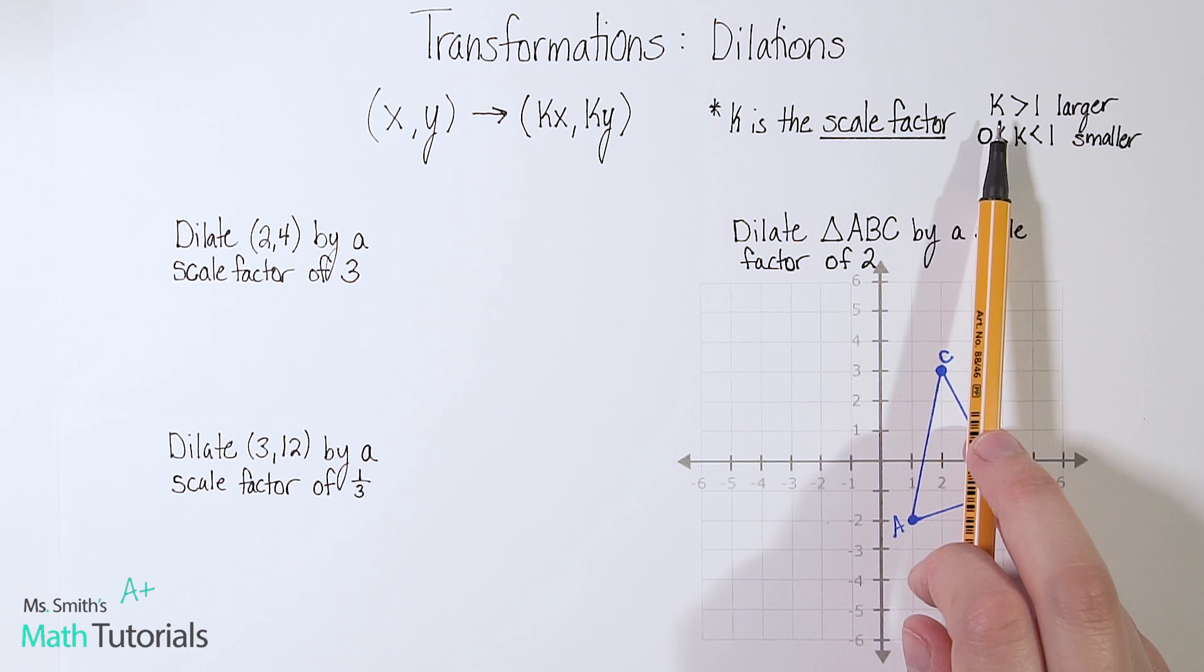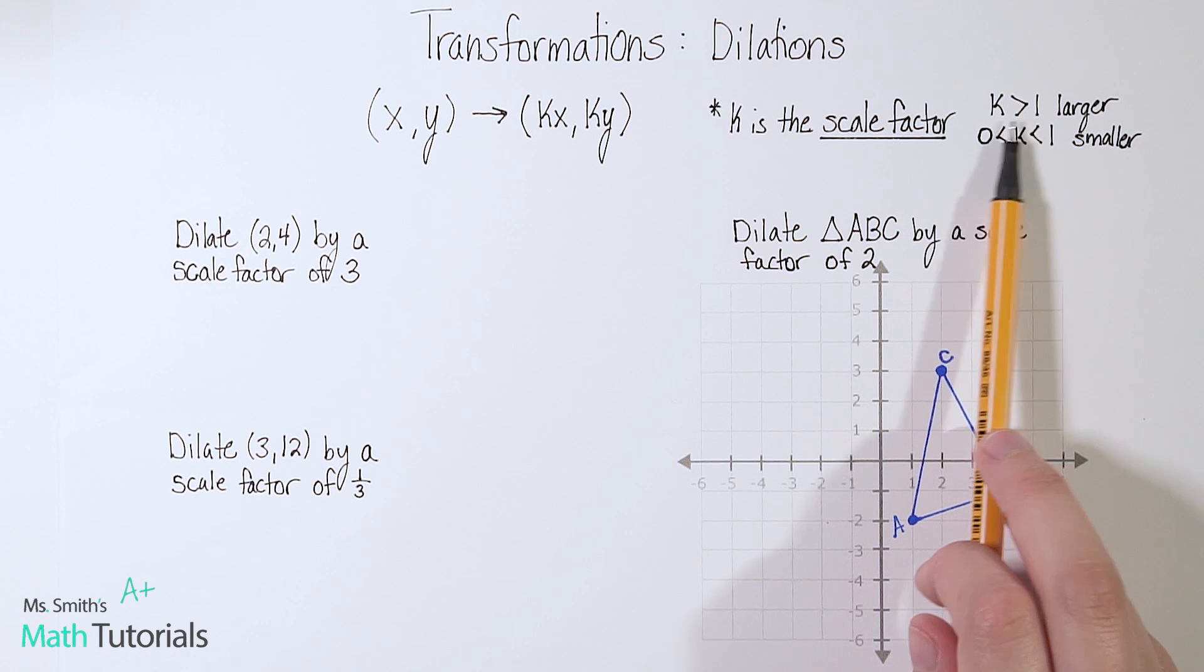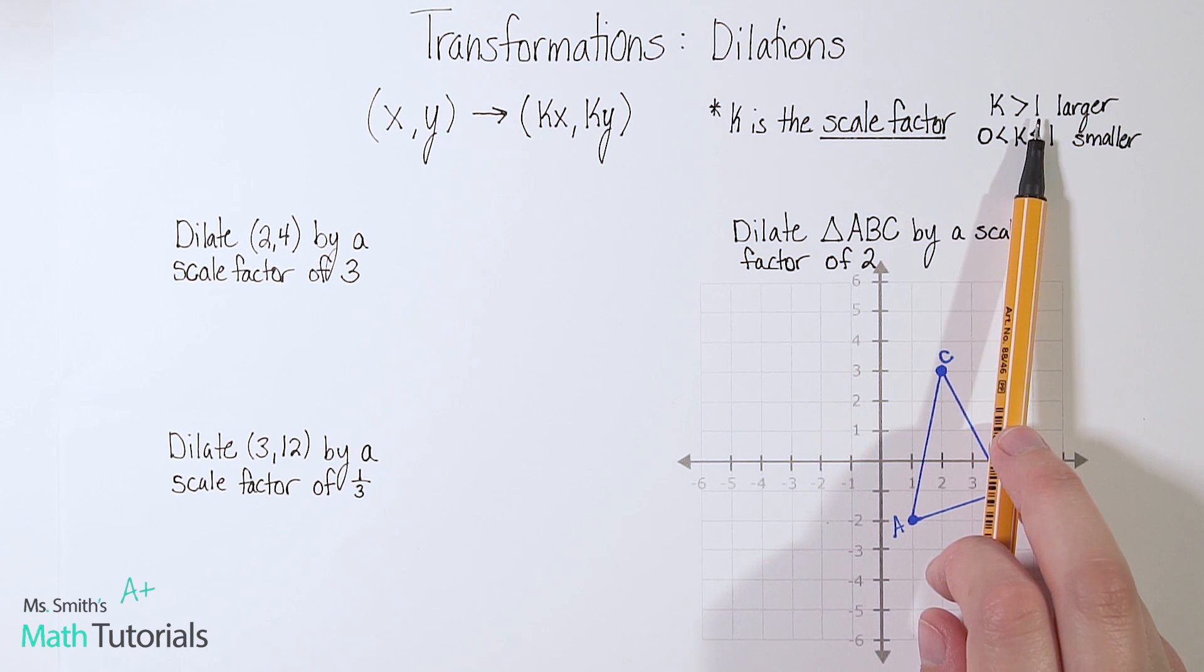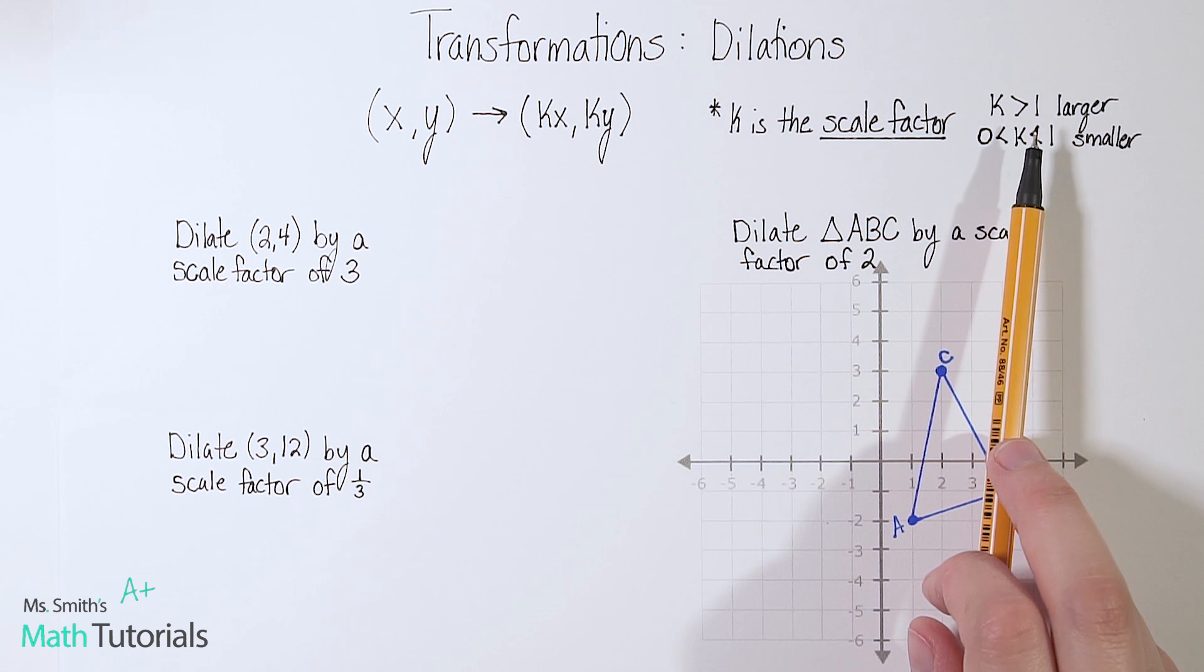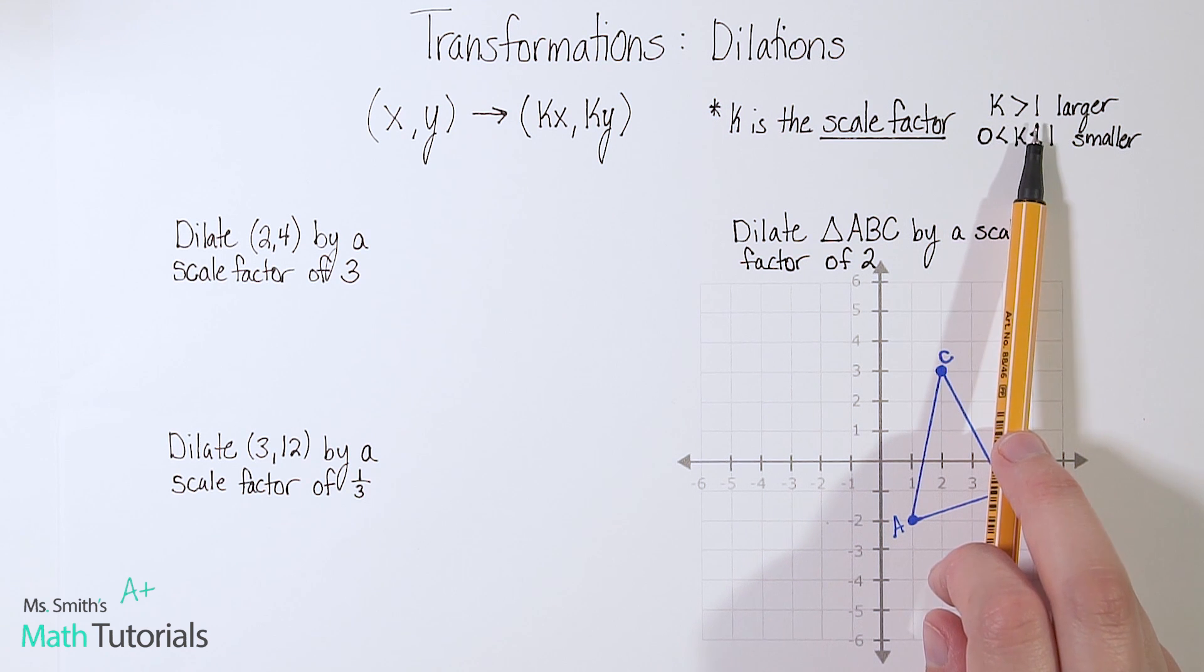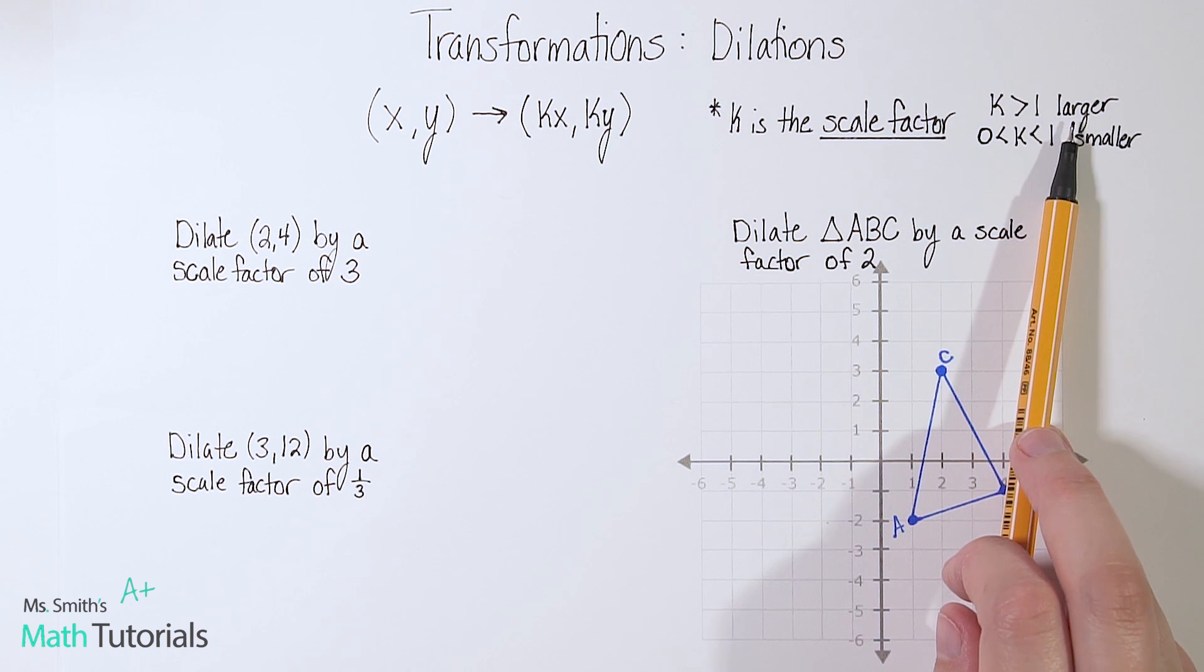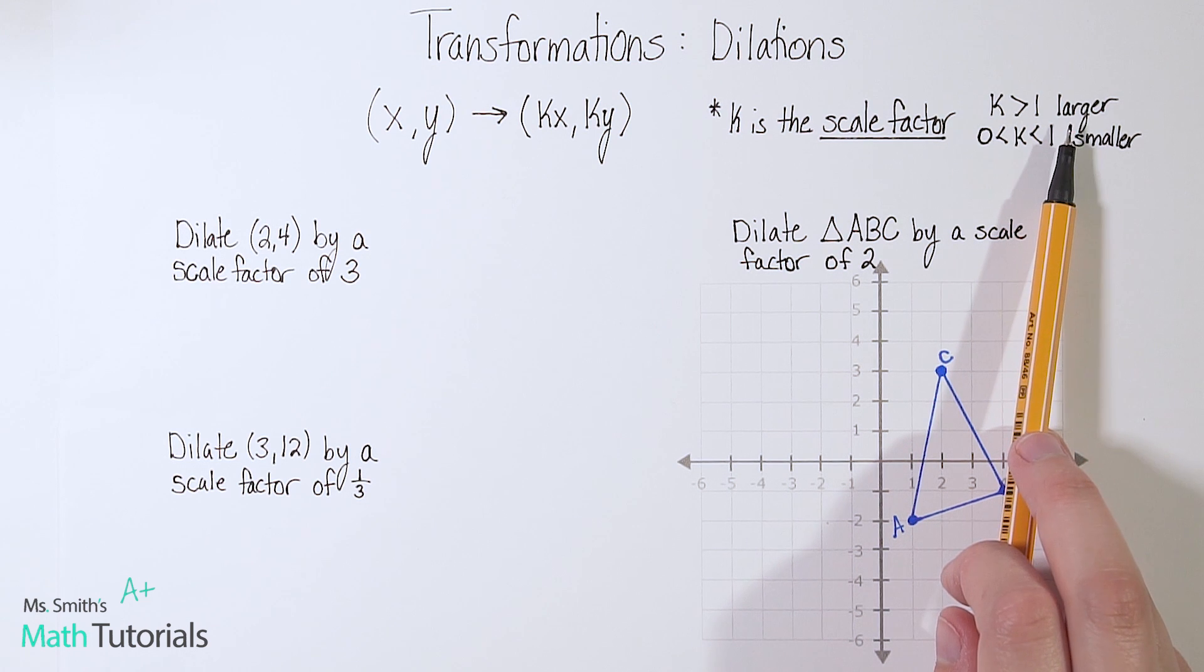So here are the rules. If k is larger than one, if k is greater than one, so anything bigger than one, 1.5, 2, 3, anything greater, then our shape is going to get larger in size, it's going to get bigger.